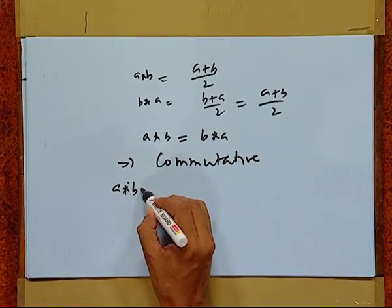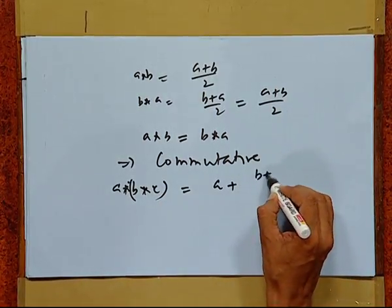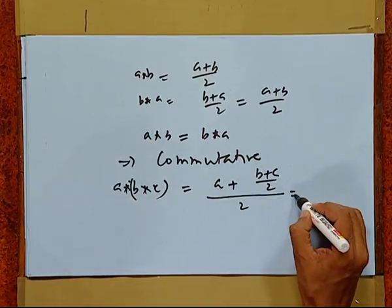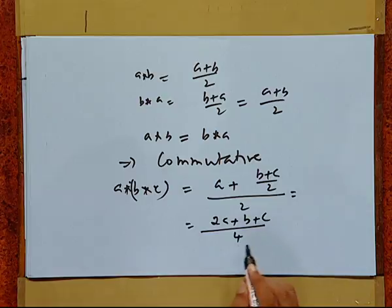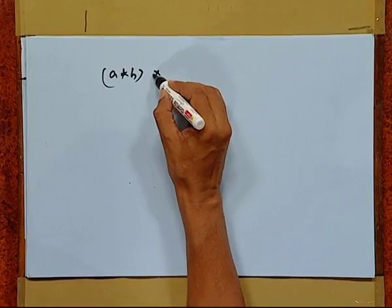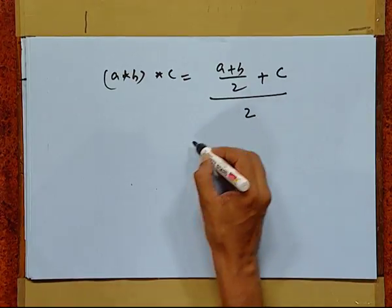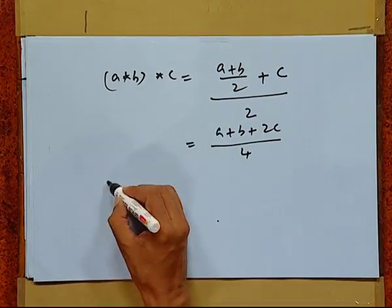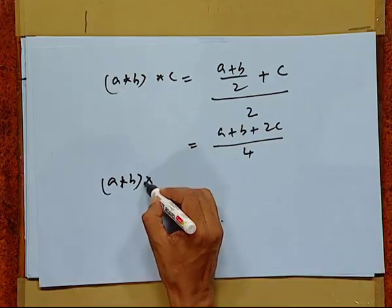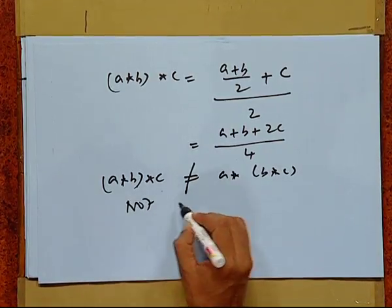To show the first operation is associative: (A star B) star C equals 1 star C equals 1, whereas A star (B star C) equals A star 1 equals 1. Thus (A star B) star C equals A star (B star C), so it is associative. For the second operation A star B = (A+B)/2, testing associativity: (A star B) star C = ((A+B)/2 + C)/2, which simplifies differently from A star (B star C). So the second operation is not associative.